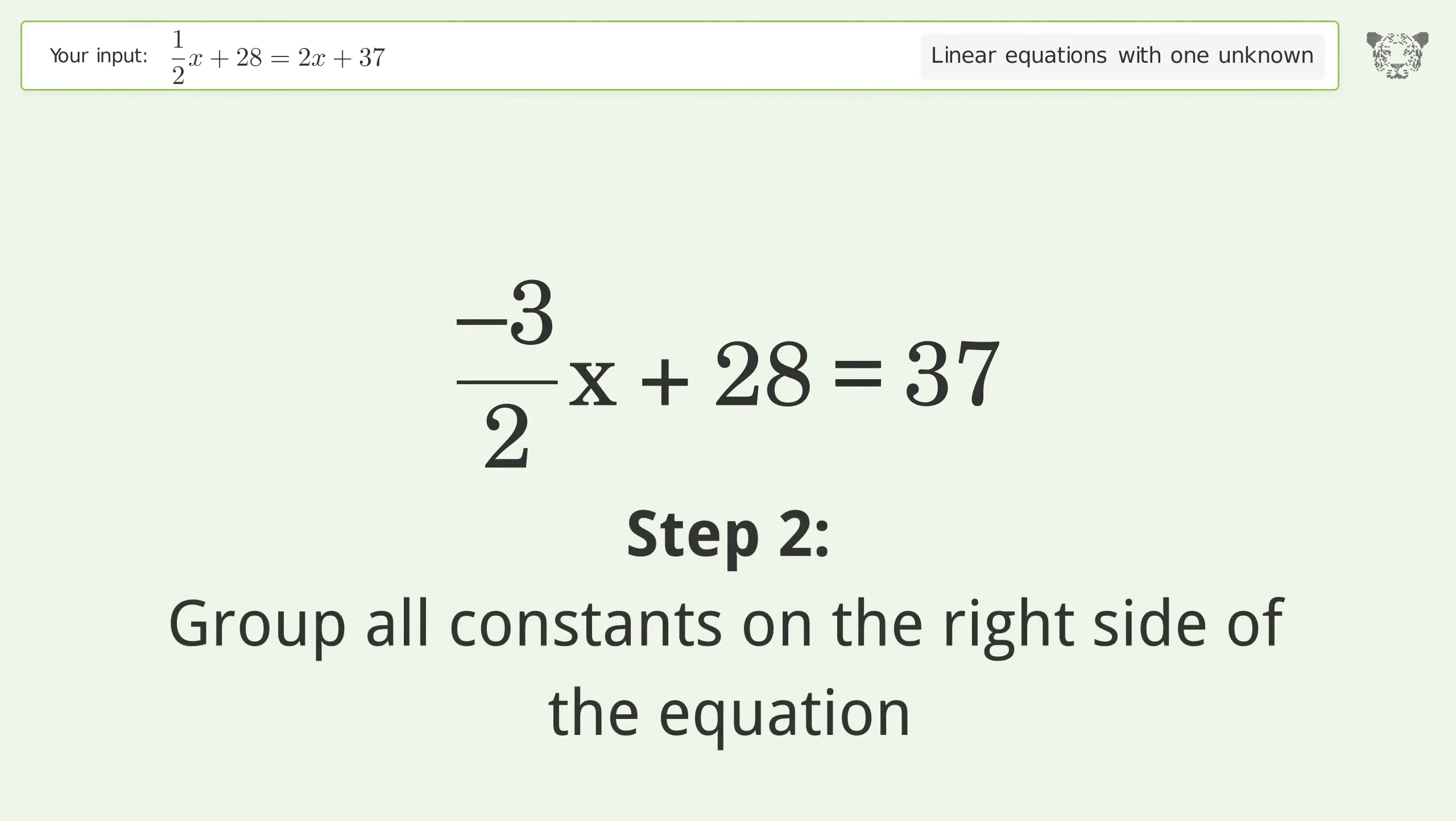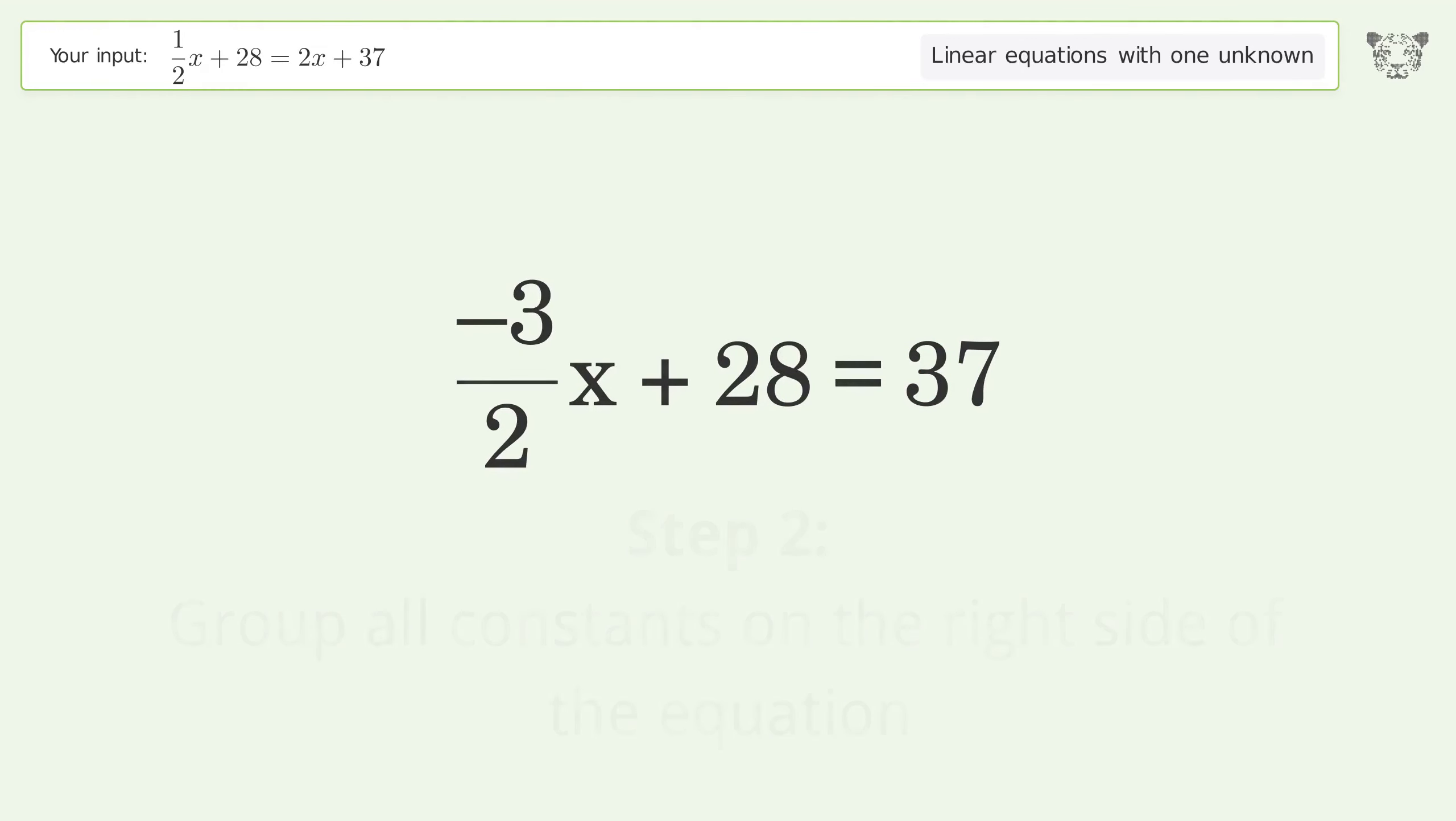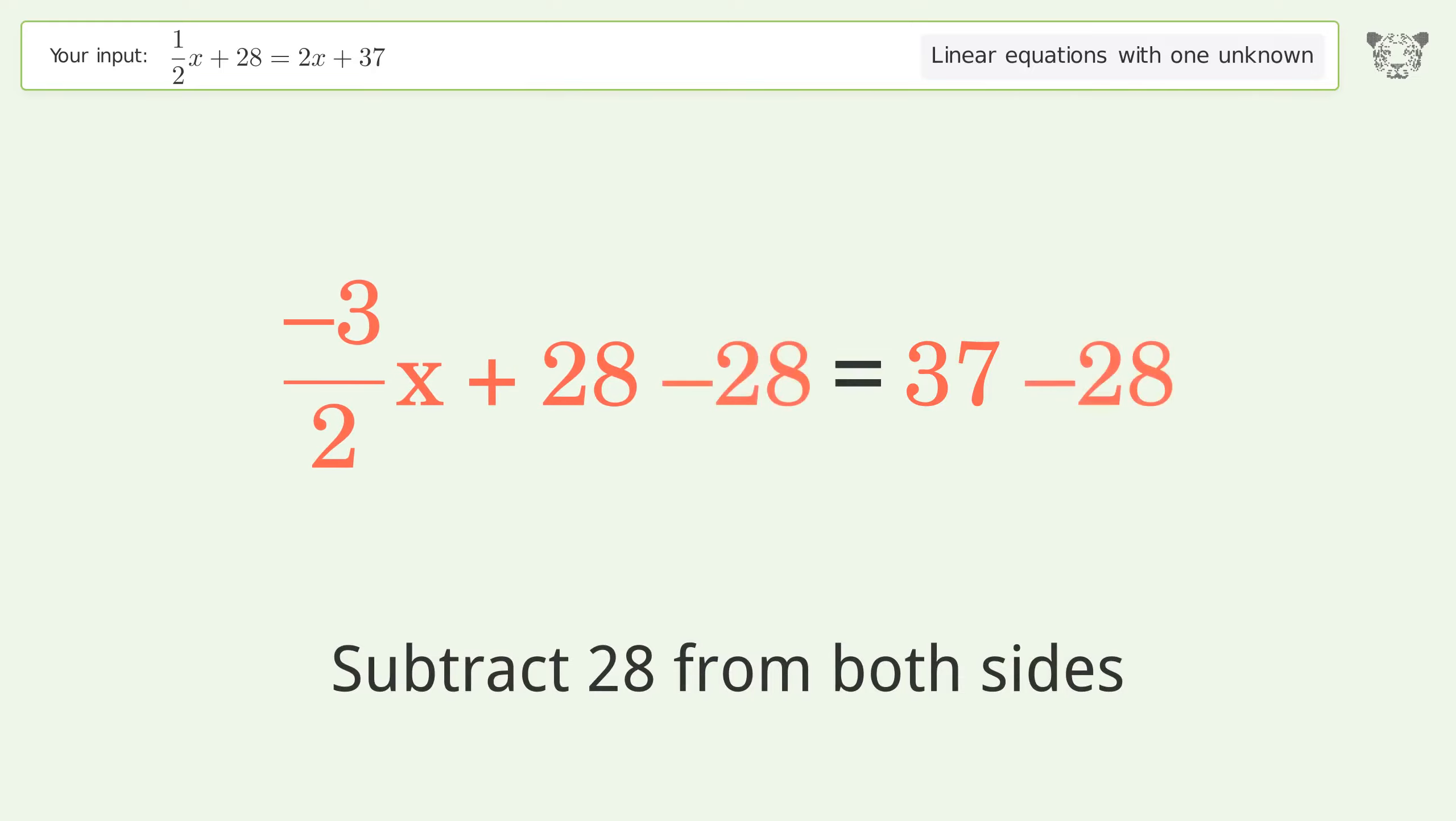Group all constants on the right side of the equation. Subtract 28 from both sides. Simplify the arithmetic.